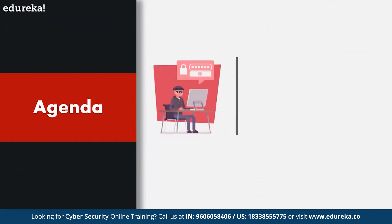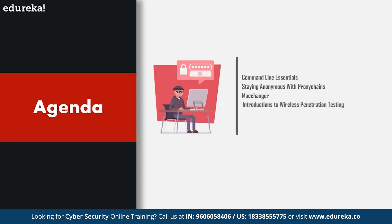Now this brings us to the main agenda of today's video. Now that we know what Kali Linux is, how it works, and why you should be using it, let's go through the topics we'll cover. We'll go through some command line essentials because Kali Linux tools are mostly in CLI format. Then we'll tackle how to stay anonymous using proxy chains in Kali Linux. We'll talk about MAC changers, wireless penetration testing, tools like Aircrack-ng, brute forcing WPS pins, router vulnerabilities, and some other miscellaneous topics. Let's dive into the first topic — command line essentials.